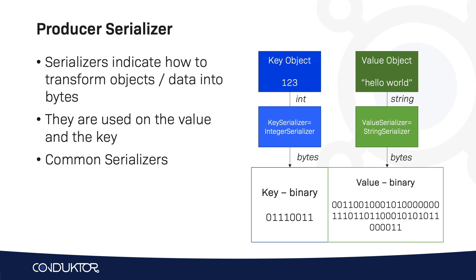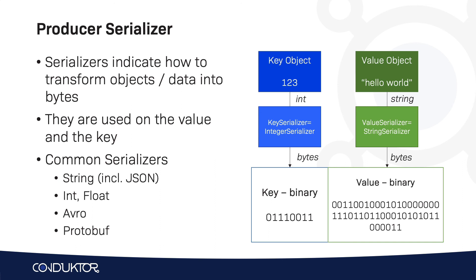Some common serializers are: StringSerializer (including JSON if your data is JSON), Integer and Float serializers for numbers, and Avro and Protobuf for more advanced data types, which we'll see later in this course. That's all you need to know about producers — now let's go into Conductor to practice and send our first messages into our Kafka topics. See you in the next lecture.